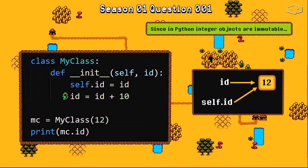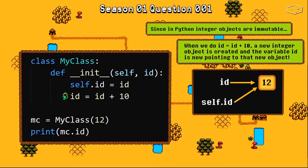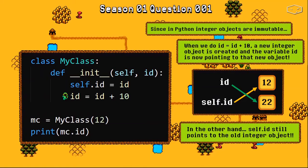Because in Python, integer objects are immutable. So when we do id equals to id plus 10, a new integer object is created and the variable id is now pointing to that new object. On the other hand, self.id still points to the old integer object. So this is why we get the value 12 when we do print mc.id.